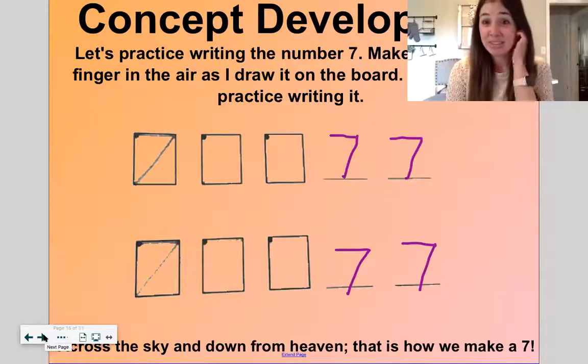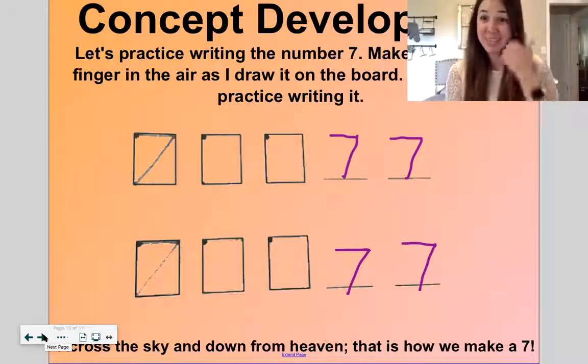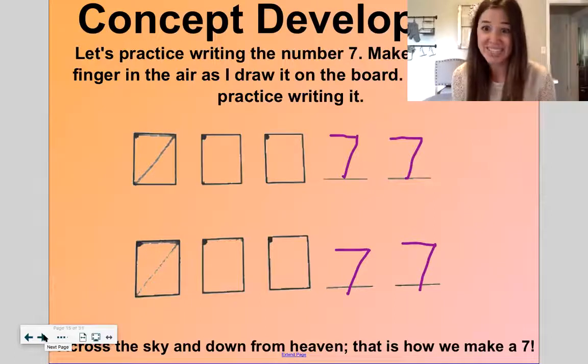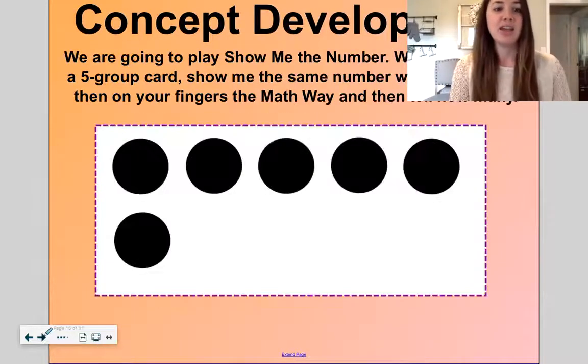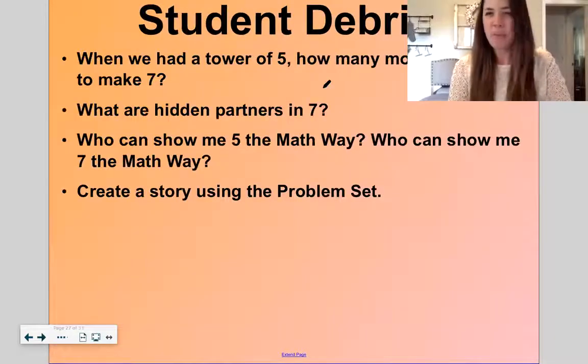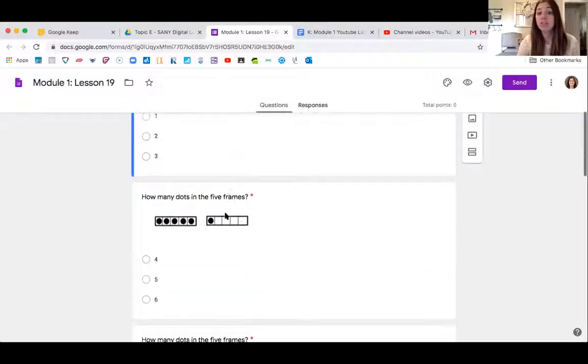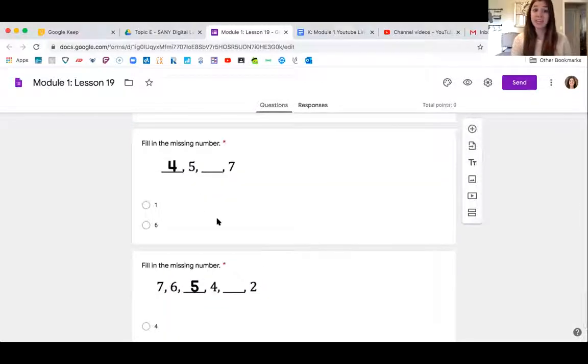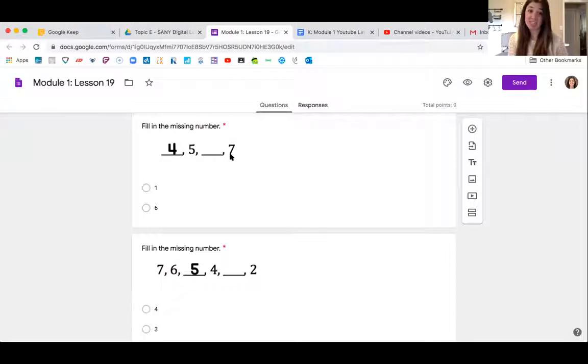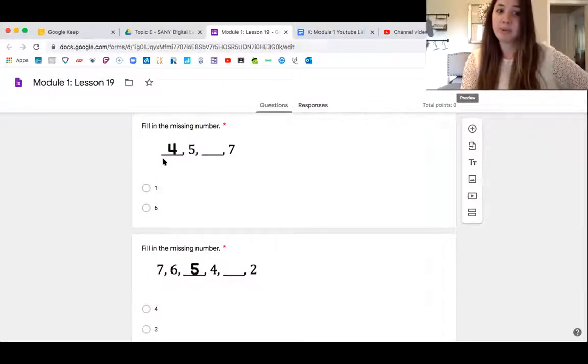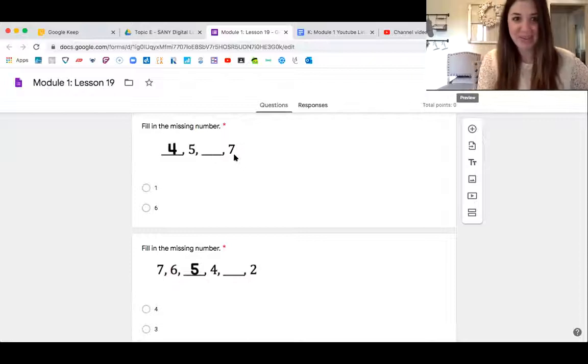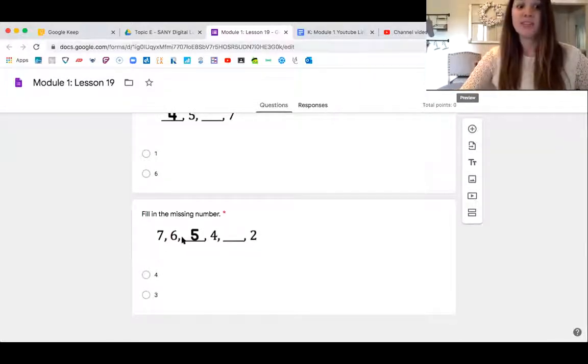If you wrote your number sevens on a piece of paper or whatever you wrote on, take a picture of it and send it to me or your teacher. We would love to see your number sevens. Now we are going to jump right to your exit ticket for the day. You're going to look at these five frames and count how many dots are inside the five frames. And then here you're going to fill in the missing number. This is like beep number, remember that game we played last lesson? So fill in the missing number. Four, five, beep, seven. Fill it in. Now here we're counting down. Seven, six, five, four, beep.